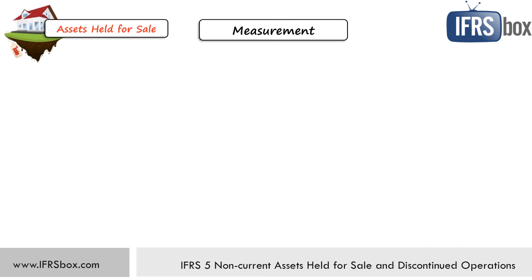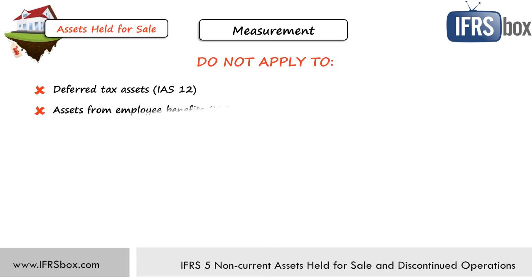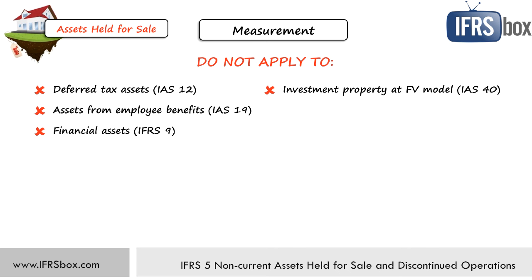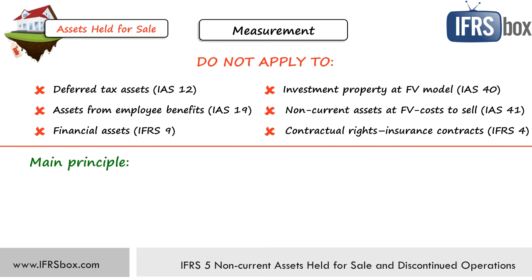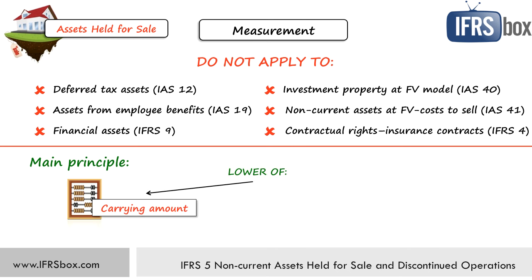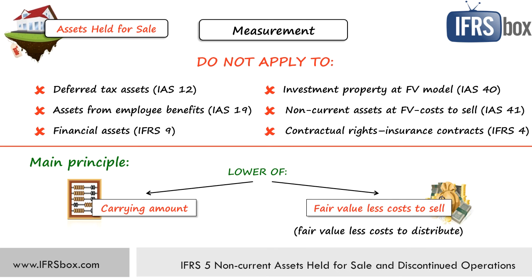How should we measure assets held for sale? Before getting into details, note that measurement rules do not apply to deferred tax assets under IAS 12, assets from employee benefits under IAS 19, financial assets under IFRS 9, non-current assets measured using the fair value model under IAS 40, non-current assets measured at fair value less cost to sell under IAS 41 (that's agriculture), and contractual rights from insurance contracts under IFRS 4. These are measurement exceptions only. So if you decide to sell a financial asset and meet the conditions, you can classify it as held for sale and present it as such, but you measure it under IFRS 9, not under IFRS 5. For all other assets classified as held for sale, the main principle is to measure them at the lower of their carrying amount and their fair value less cost to sell — or fair value less cost to distribute if it's an asset for distribution to owners.